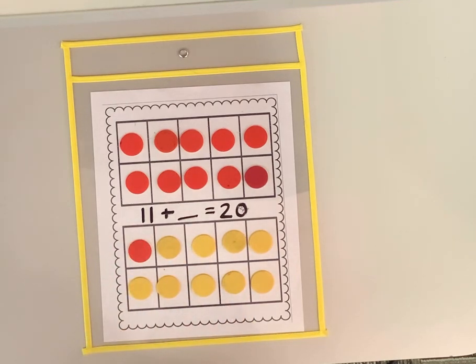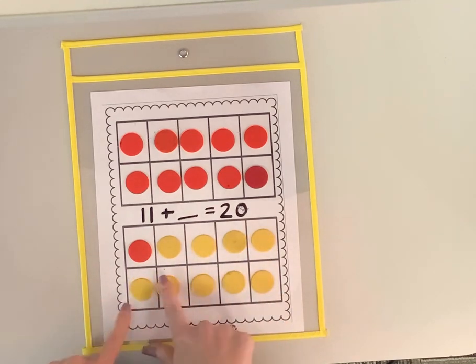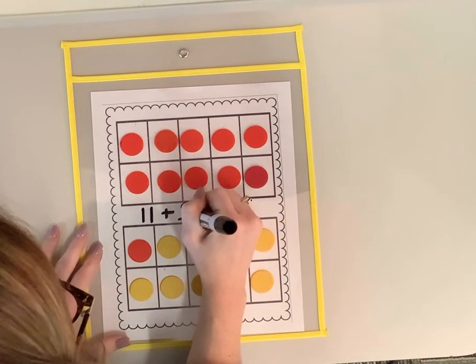So let's see. Ready? One, two, three, four, five, six, seven, eight, nine. Did you think it was nine too? You guys are so smart.